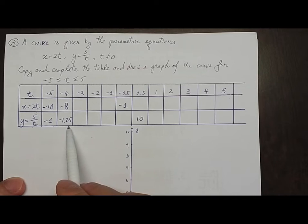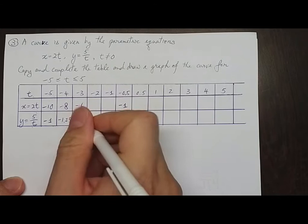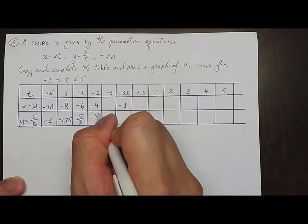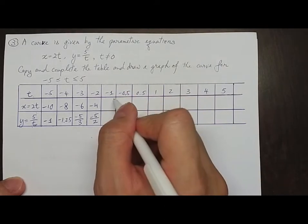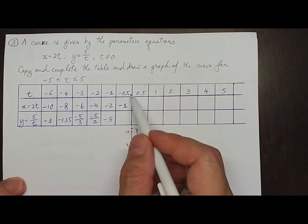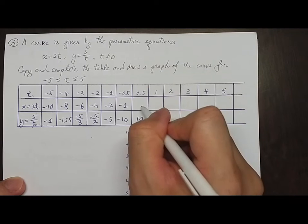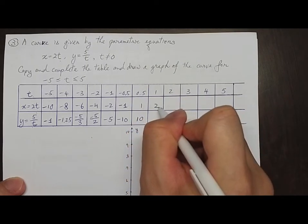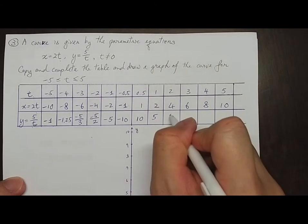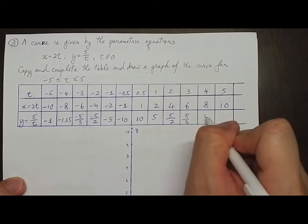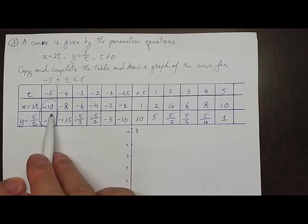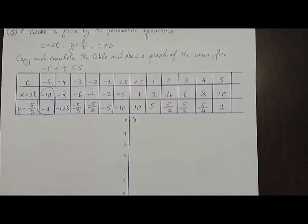Continuing: when t = −4, x = −8, y = −1.25. When t = −3, x = −6, y = −5/3. When t = −2, x = −4, y = −5/2. When t = −1, x = −2, y = −5. When t = −0.5, x = −1, y = −10. When t = 0.5, x = 1, y = 10. Then continuing, you get x values of 2, 4, 6, 8, 10, and y values of 5/2, 5/3, 5/4, and 1.